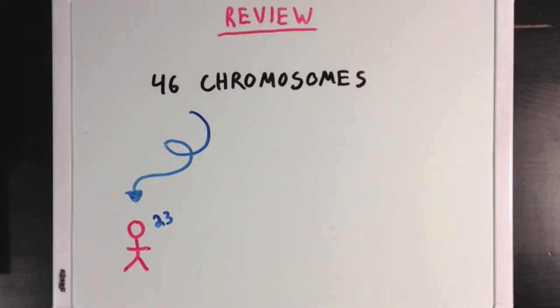And 23 of these chromosomes were inherited from a person's father, and 23 were inherited from the mother. So we can say that each person is made up of a combination of genetic code from both of their parents.